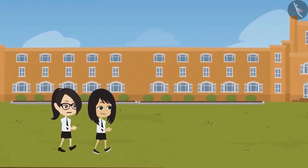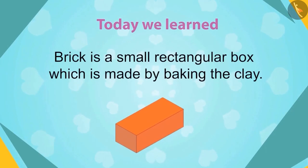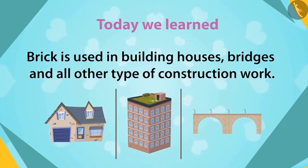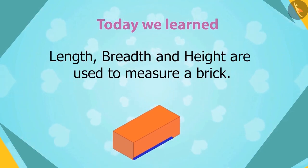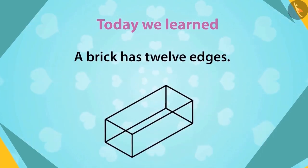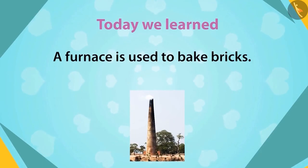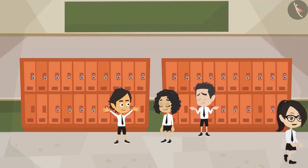Neha, did you remember what the engineer sir told us? Yes, let me summarize the information we gathered on bricks today. A brick is a small rectangular box made by baking clay. A brick is used in building houses, bridges, and all other types of constructions. The shape of a brick is cuboid. The size of a brick is determined by measuring its length, breadth, and height. A brick has 12 edges and 6 faces. Bricks are baked in a furnace. I am waiting for tomorrow because the engineer sir will bring different sizes of bricks to show us. Me too.